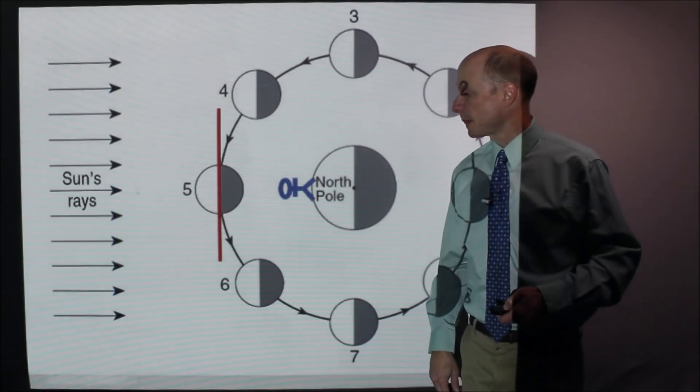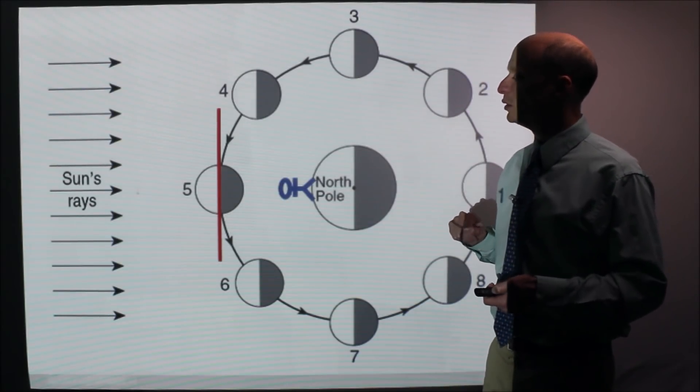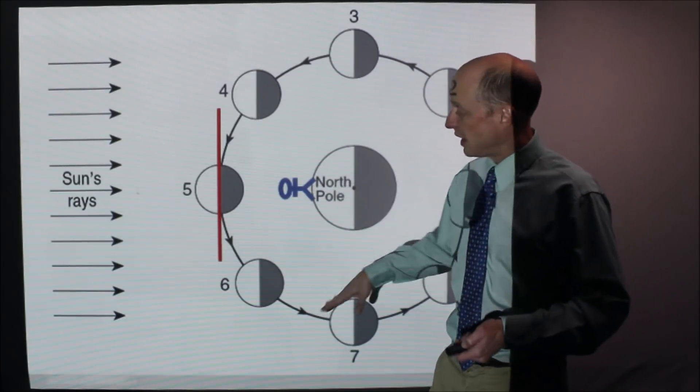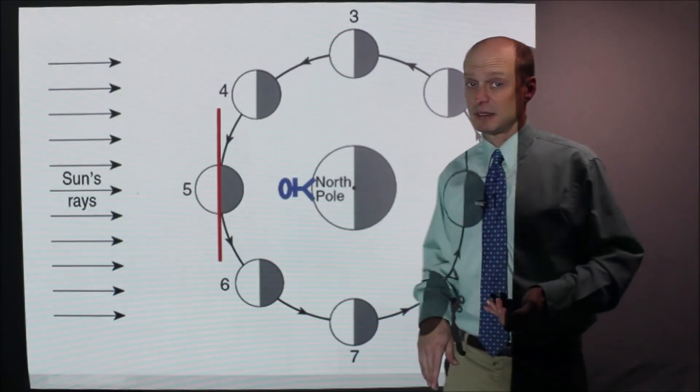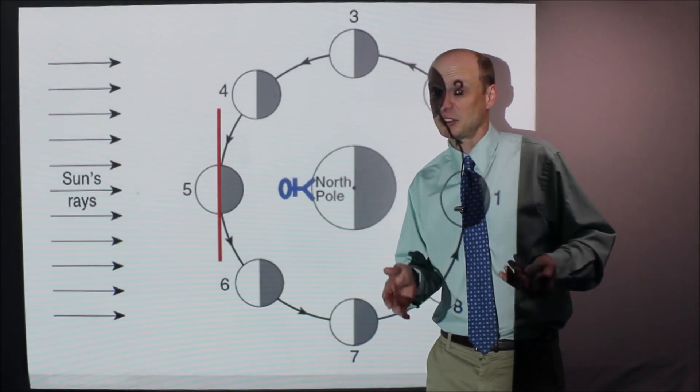Another one. In this case, let's say we want to, what would the moon look like at position five? Draw the person in there. They look up. What do they see? Mostly, I mean, pretty much all dark, right? Not even mostly, all dark.